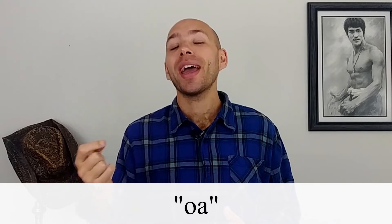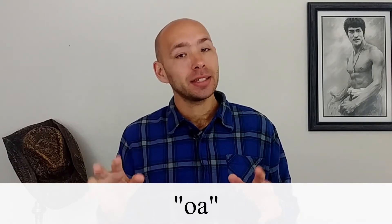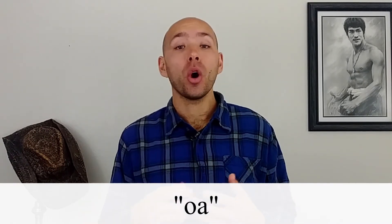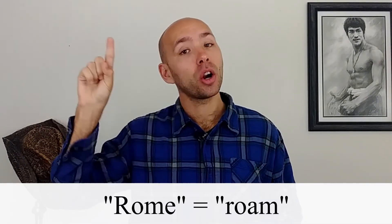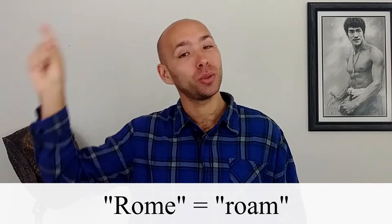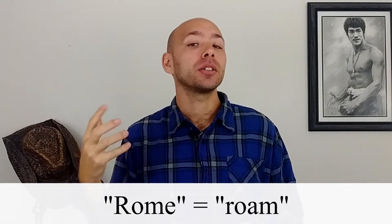And finally, we have one more common spelling pattern, which is O-A. In this case, the A is silent — it is not OA or OA or something like that. For example: loan, phone, moan, roam. Interestingly, the name of the city in Italy, R-O-M-E, notice O-E, is also pronounced the same as R-O-A-M.